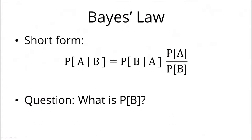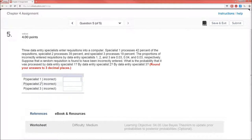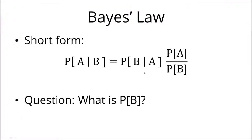Bayes' law is just a way of switching the order of the conditional probabilities. It allows us to move from probability of B given A to the probability of A given B. In this particular example, it allows us to go between the probability of specialist one given incorrect and the probability of incorrect given specialist one. All we have to do is know the probability of A and the probability of B.